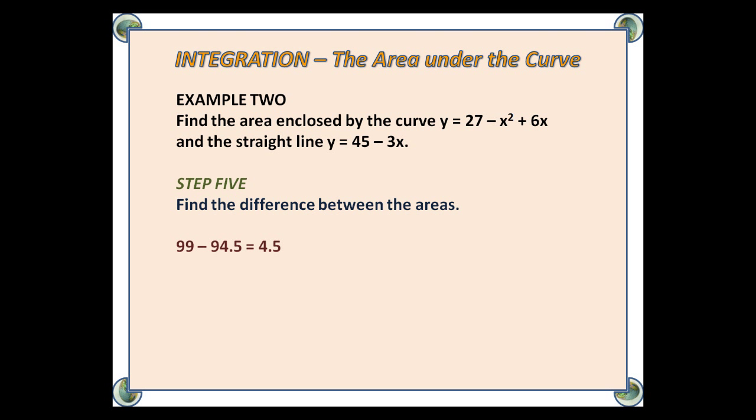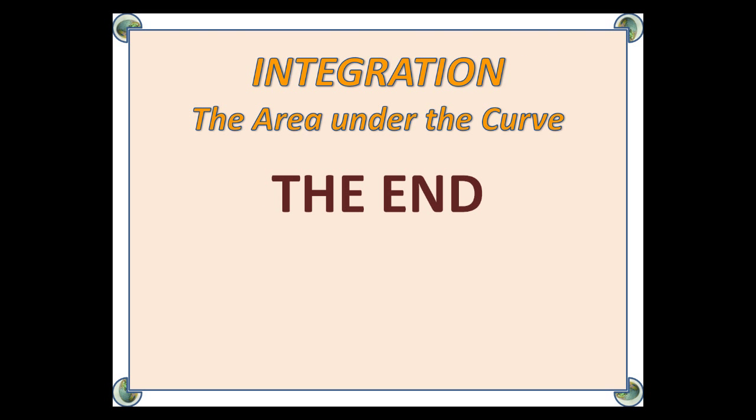So the area enclosed is the difference between the areas. That's 99 - 94.5, which is 4.5. The end.